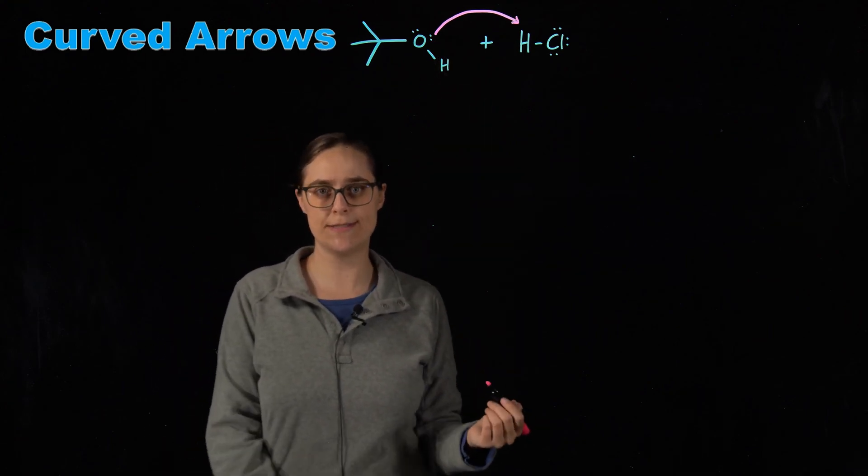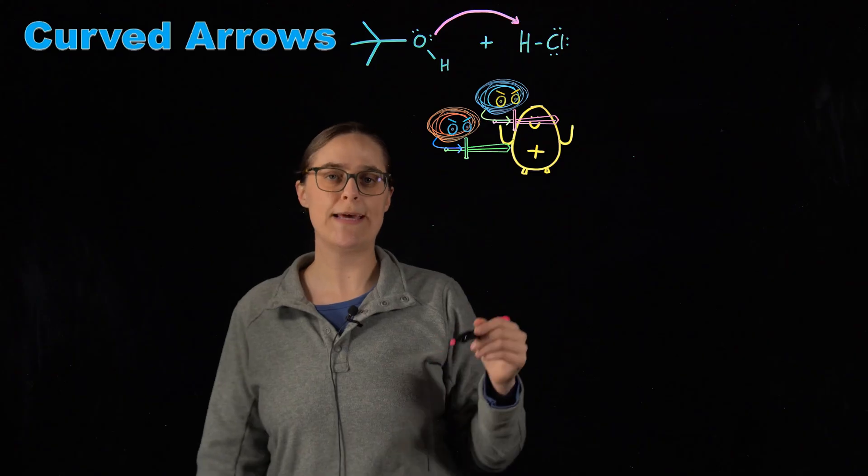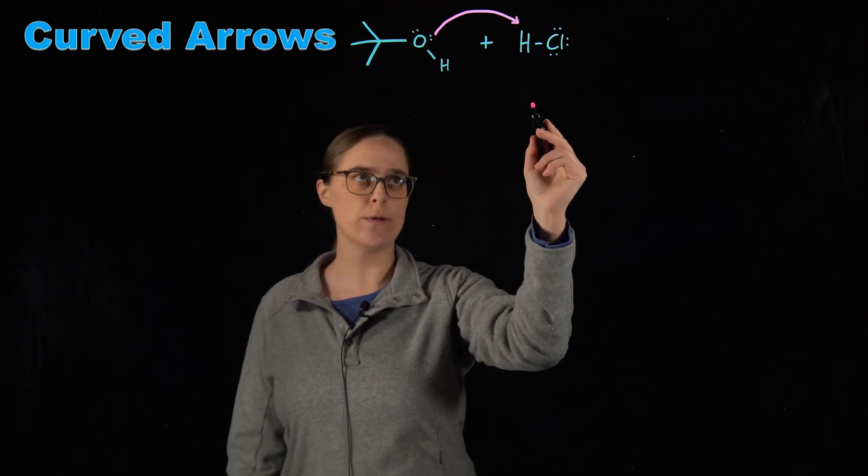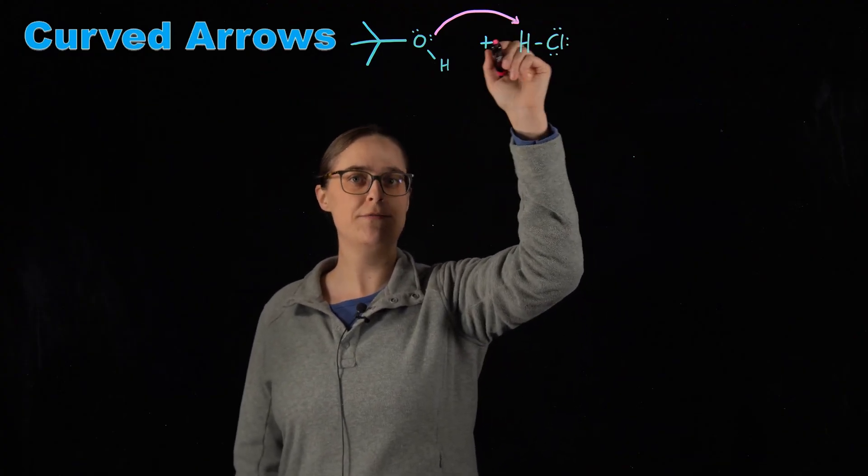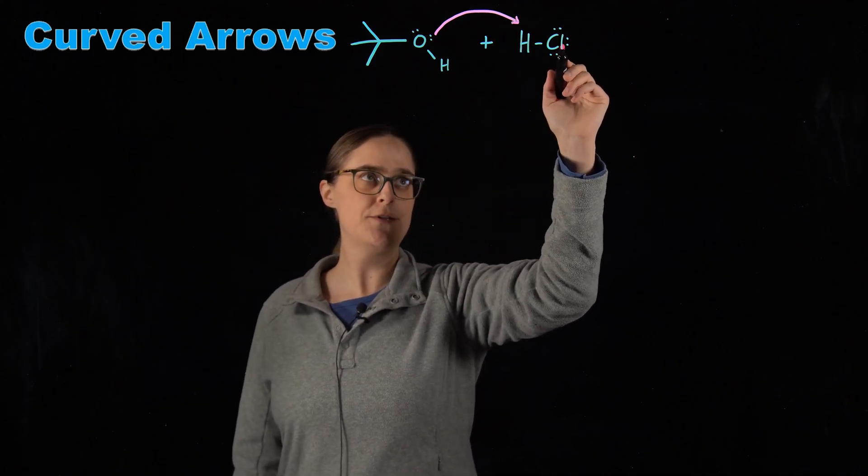And the head is going to be pointed at the electrophile. So this hydrogen chloride is polar. The chlorine is more electronegative than the hydrogen. So the chlorine is going to have a partial negative charge.